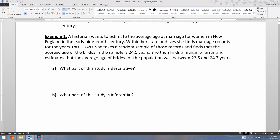Alright, so let's read here. A historian wants to estimate the average age at marriage for women in New England in the early 19th century. So at what age did women get married at their first marriage in the early 19th century? Within her state archives, she finds marriage records for the years 1800 to 1820. She takes a random sample of those records and finds that the average age of the brides in the sample is 24.1 years. She then finds a margin of error and estimates that the average age of brides for the population was between 23.5 and 24.7 years.